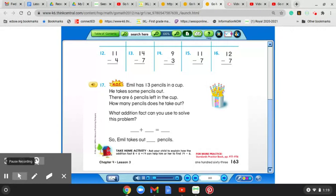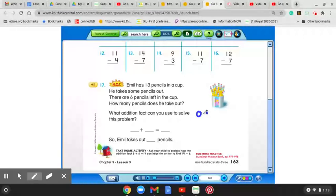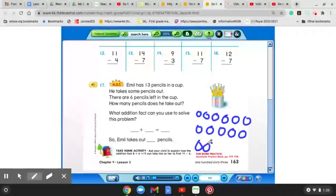Okay, so we would want to start and think that, first of all, he had 13 pencils in the cup. Now you may even want to, they did draw the cup, but you may even want to draw some circles right here and maybe draw 13 circles to show the pencils, and it would help you to see them better. So I'm going to do that right now. Okay, there we have our 13.